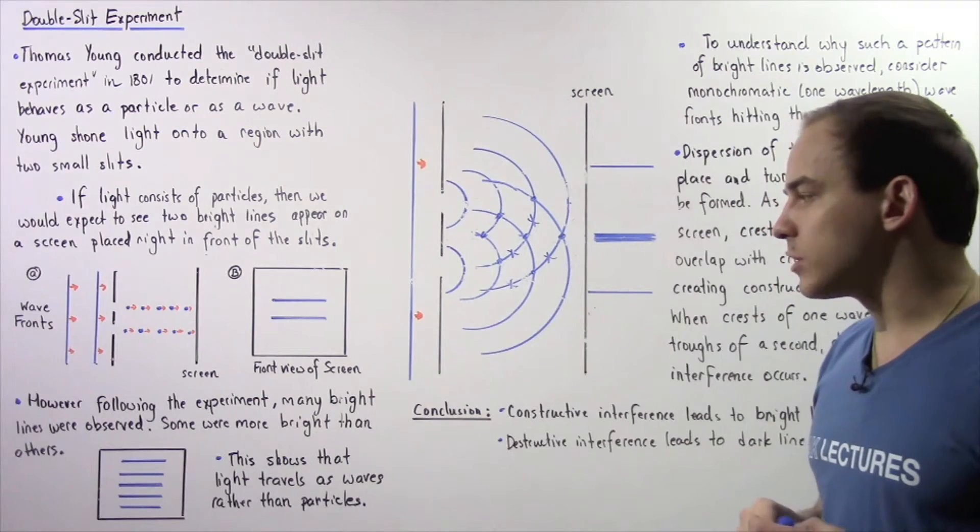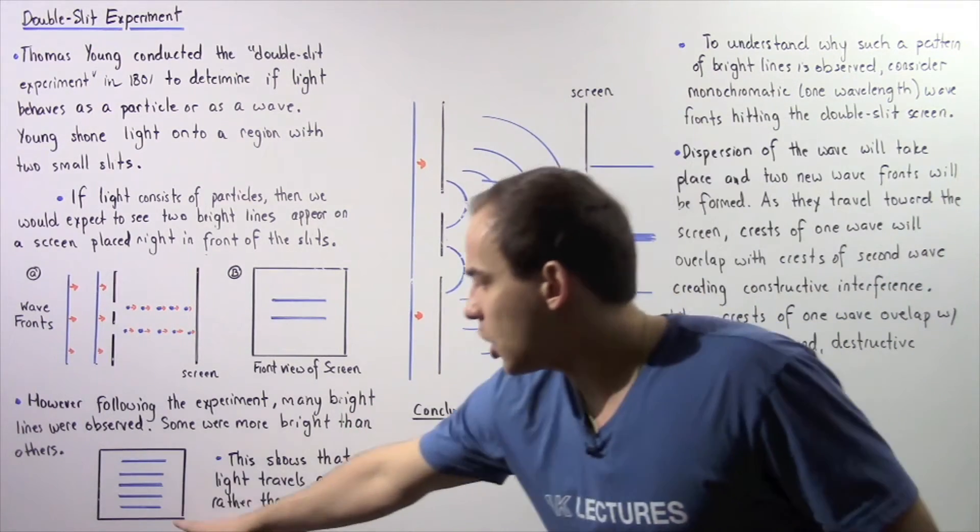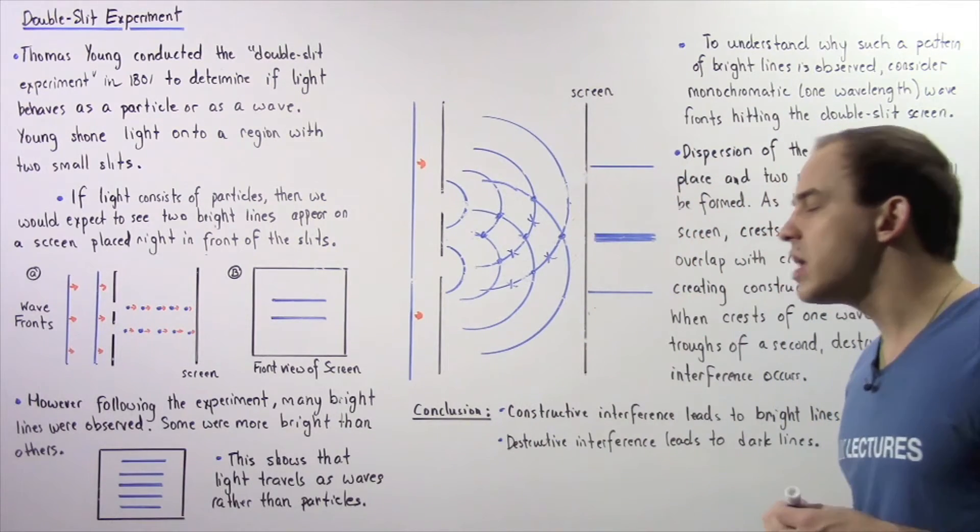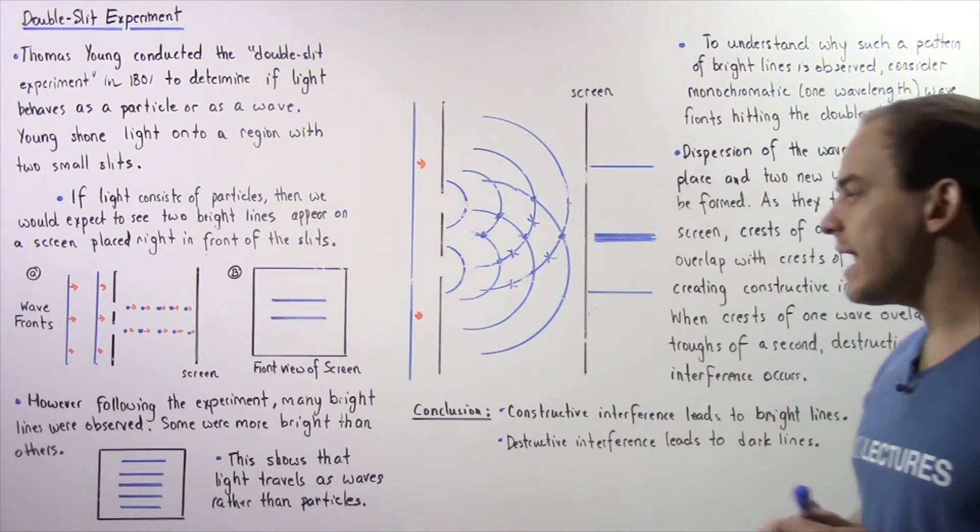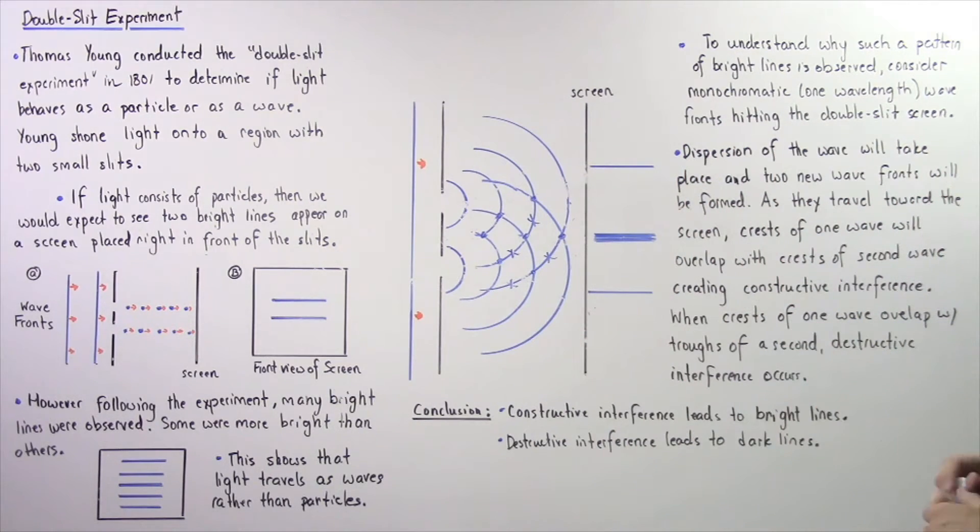many bright lines were observed, and some were more bright than others as shown in the following diagram. So this basically showed that for this particular case, light travels as a wave rather than a particle.